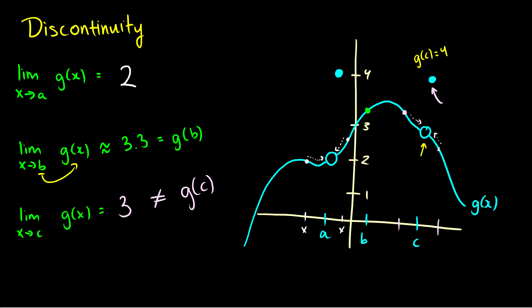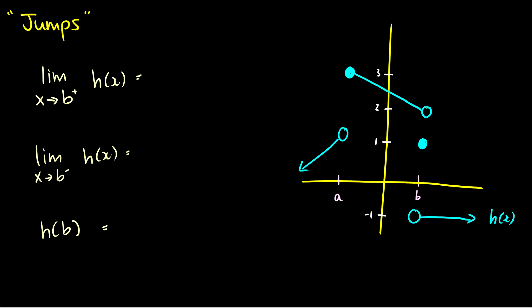Hopefully that example has shown you discontinuities. Now there's one more thing that can happen, which we'll call jumps. These are discontinuities, but they look a little different. Looking at point a on h(x), from the left as we approach a, we get 1; but from the right, we get 3. In fact, h(a) also equals 3, so the right-hand limit equals h(a), but the left-hand limit equals 1. Therefore, the limit as x approaches a of h(x) does not exist.